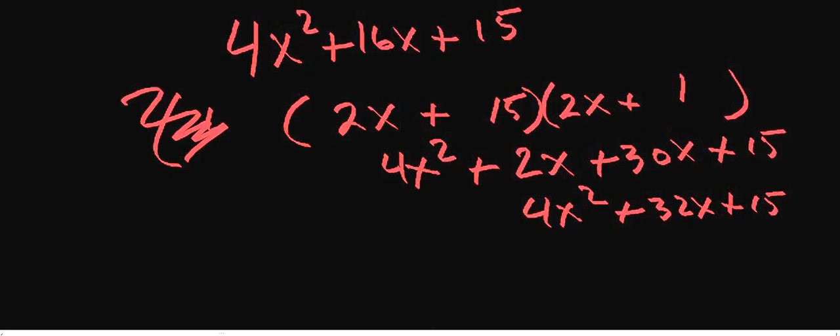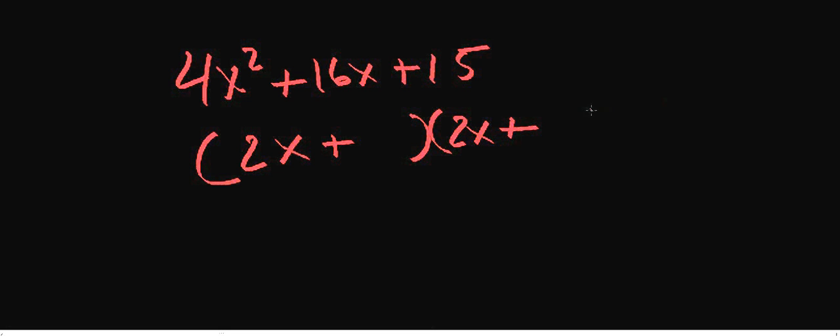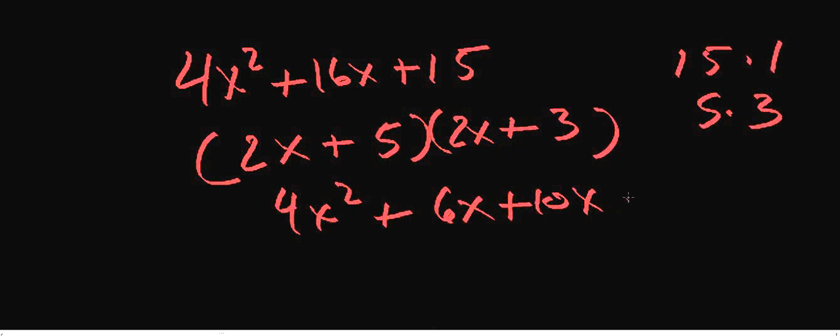Let's try it again. 4x squared plus 16x plus 15. Let's keep going with that 2x. So we tried 15 and 1, that didn't work. Let's try 5 and 3. Put our 5 here and our 3 here. 4x squared plus 6x plus 10x plus 15. And this looks like that works. So you've got 4x squared plus 16x plus 15.